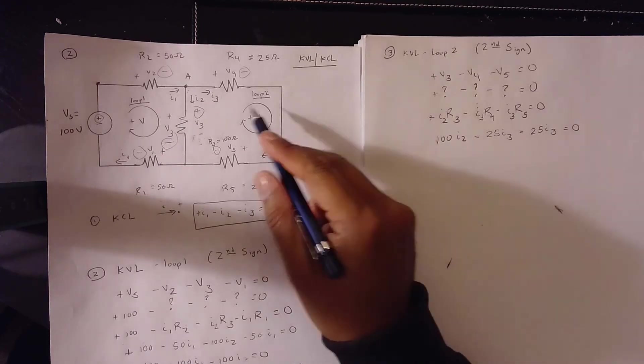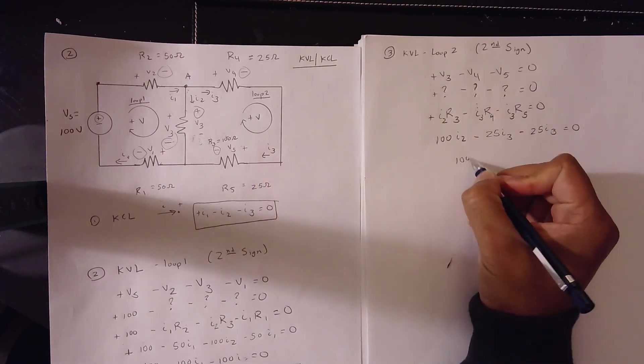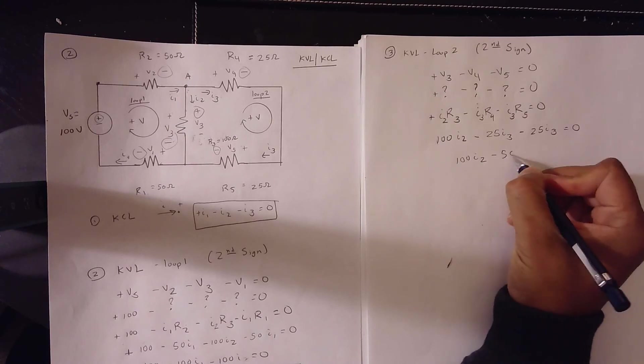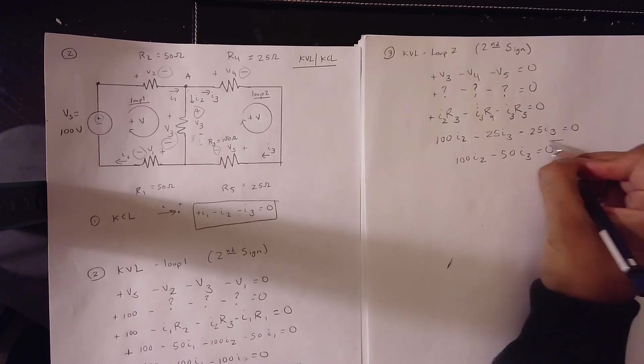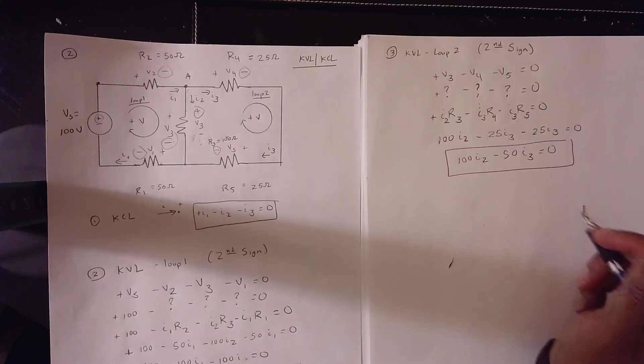So, because it's I3 across, you have 100 I2 minus 50 I3 is equal to 0. Because you add like terms.